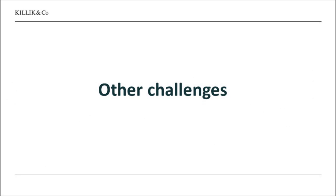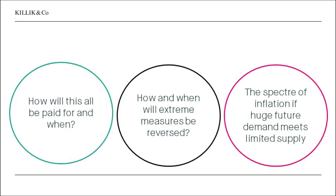Other challenges then — and I've hinted at one of these — how will this all be paid for and when? All this largesse from governments and central banks: is it going to manifest as some sort of future tax rise? Will government spending be cut back in the future? When will these extreme measures be reversed and how? If everybody is used to huge government stimulus, at what point do you declare you're going to try and pull some of that back? And we've even got the spectre of inflation. If huge future demand is suddenly released like a genie out of a bottle and it hits limited supply because factories haven't got back on their feet, you could even have an inflation spike. We're probably looking at deflation in the short term, but re-inflation is definitely a possibility.